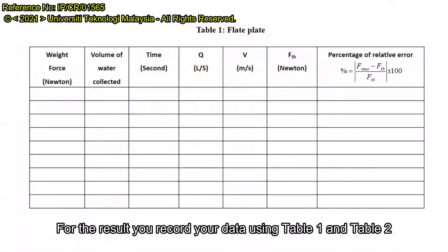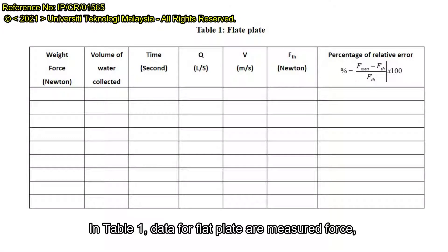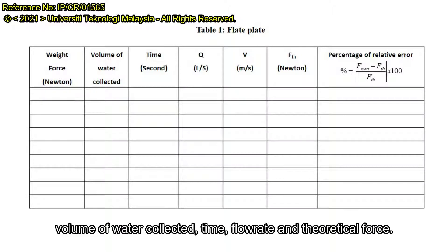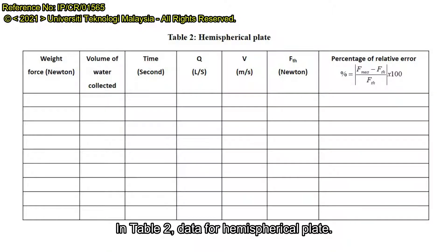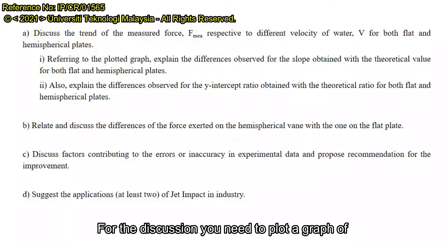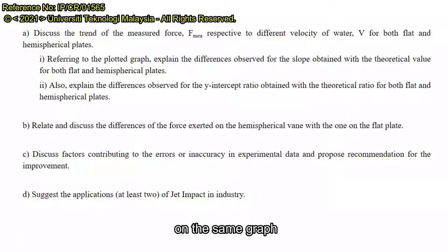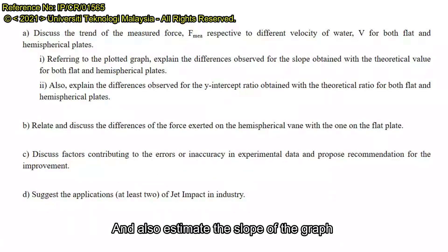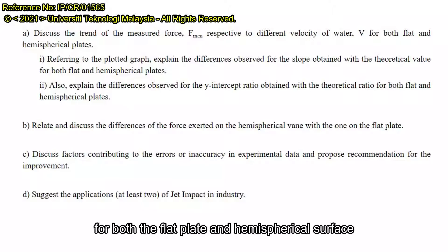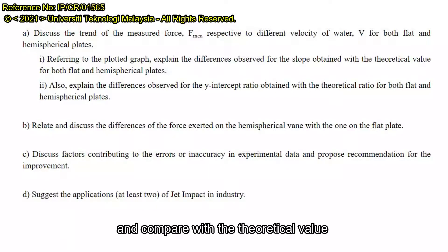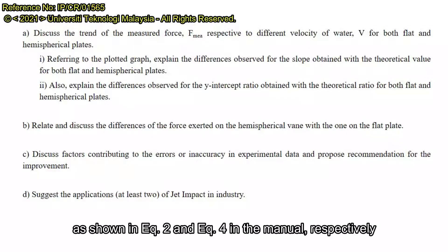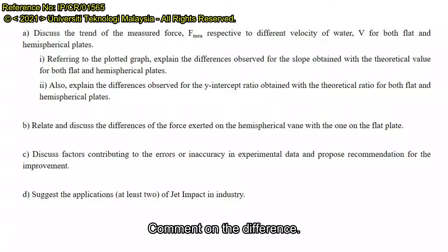For the results, record your data using Table 1 and Table 2. In Table 1, the data for the flat plate are: measured force, volume of water collected, time, flow rate, and theoretical force. In Table 2, you need to plot the graph of log F measured versus log velocity for both the flat plate and hemispherical surface on the same graph. Also estimate the slope of the graph for both the flat plate and hemispherical surface and compare with the theoretical value as shown in equation 2 and equation 4 in the manual respectively. Comment on the difference.